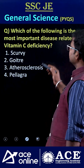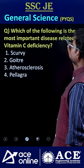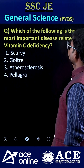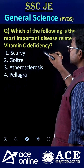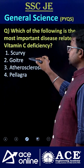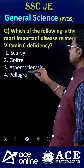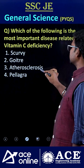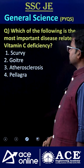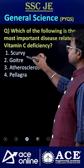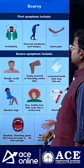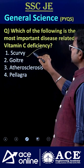Welcome to Ace Online. Which of the following is the most important disease related to vitamin C deficiency? The options are: scurvy, goiter, atherosclerosis, and pellagra. The correct answer is option one — scurvy.